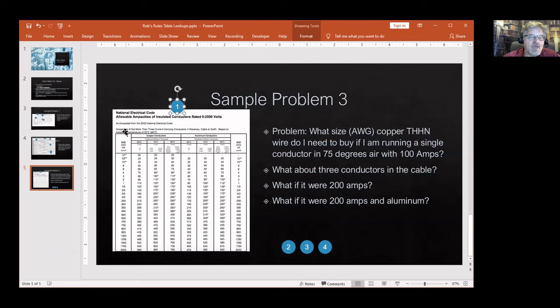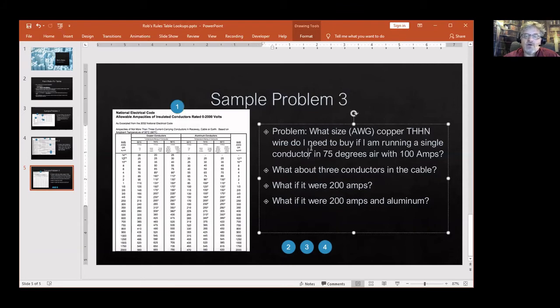Then down below it says ampacity is not more than three current carrying conductors in raceway, cable or earth. Whoa, three current carrying conductors. Do I have the right table? No I don't, because I ask about a single conductor, a single conductor in 75 degree air.